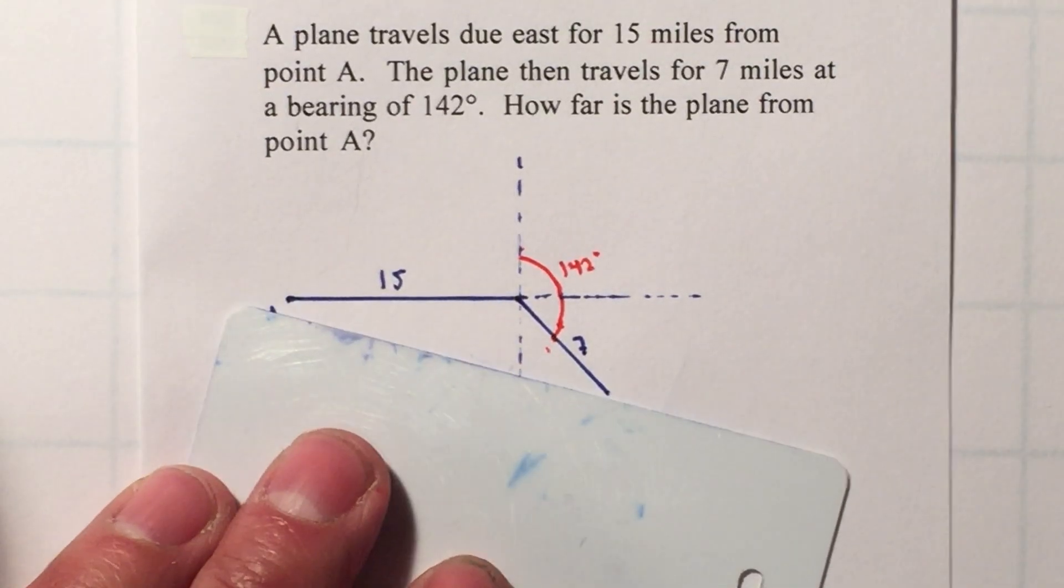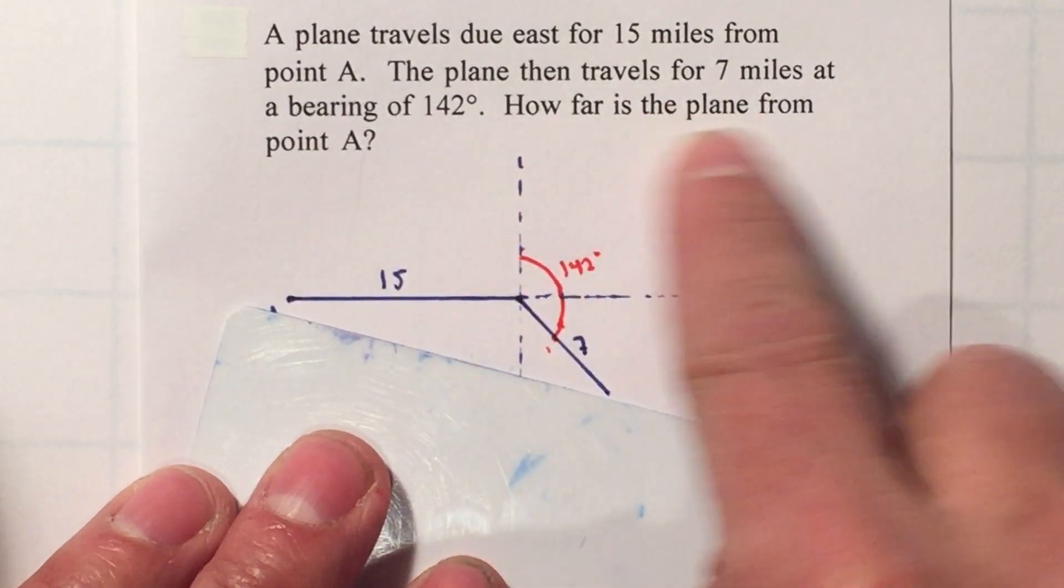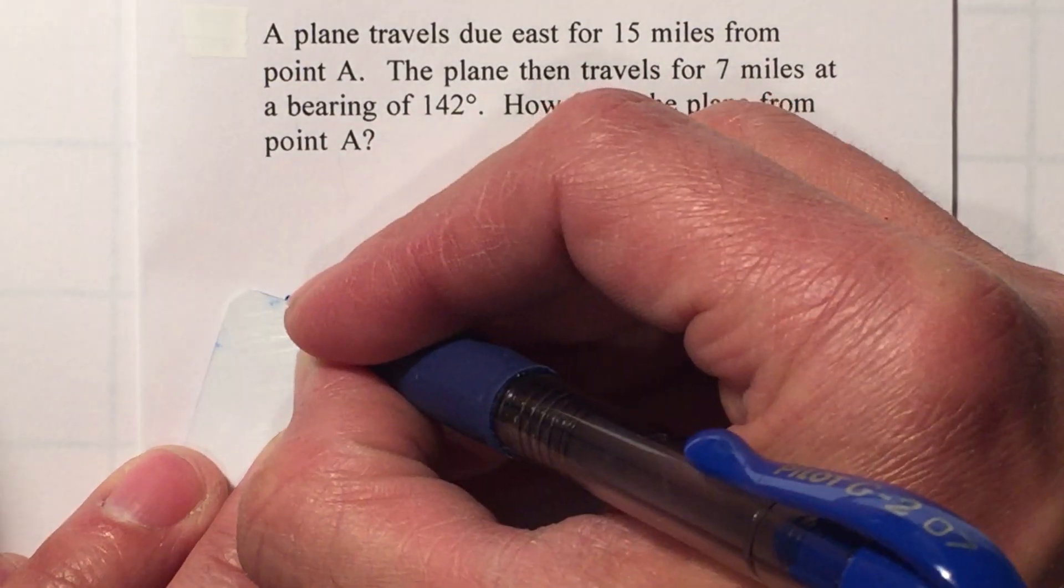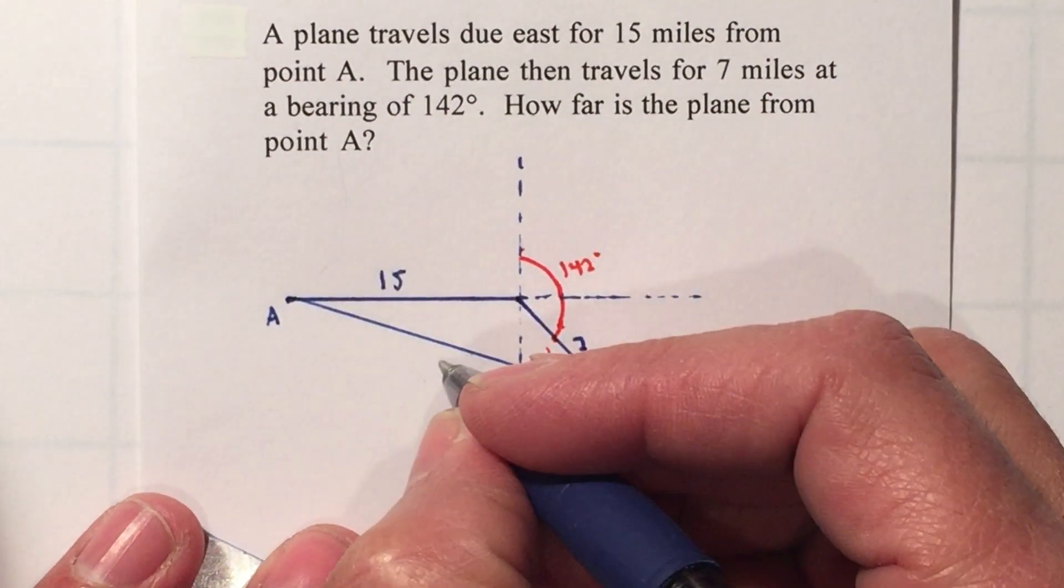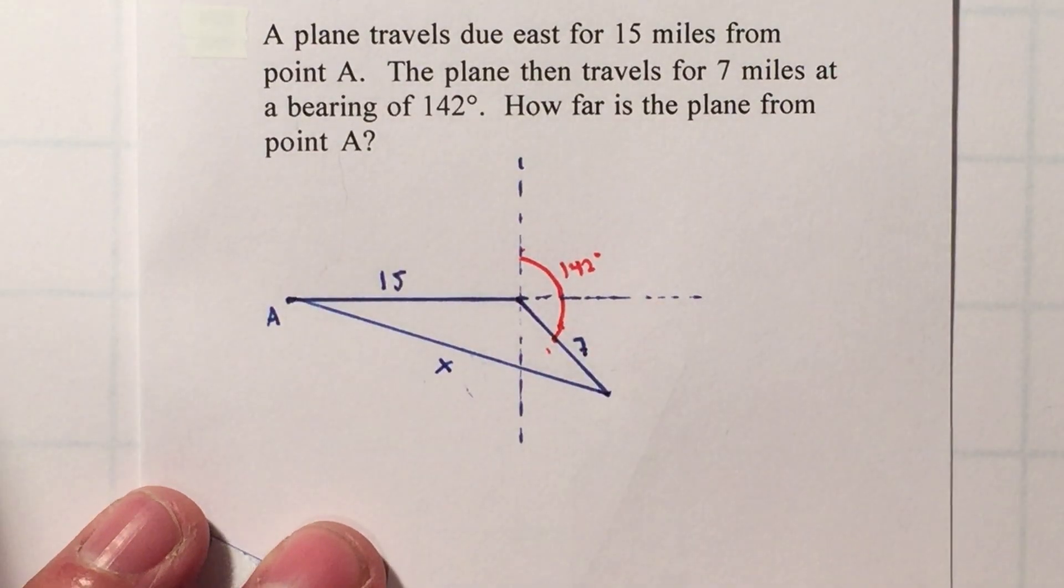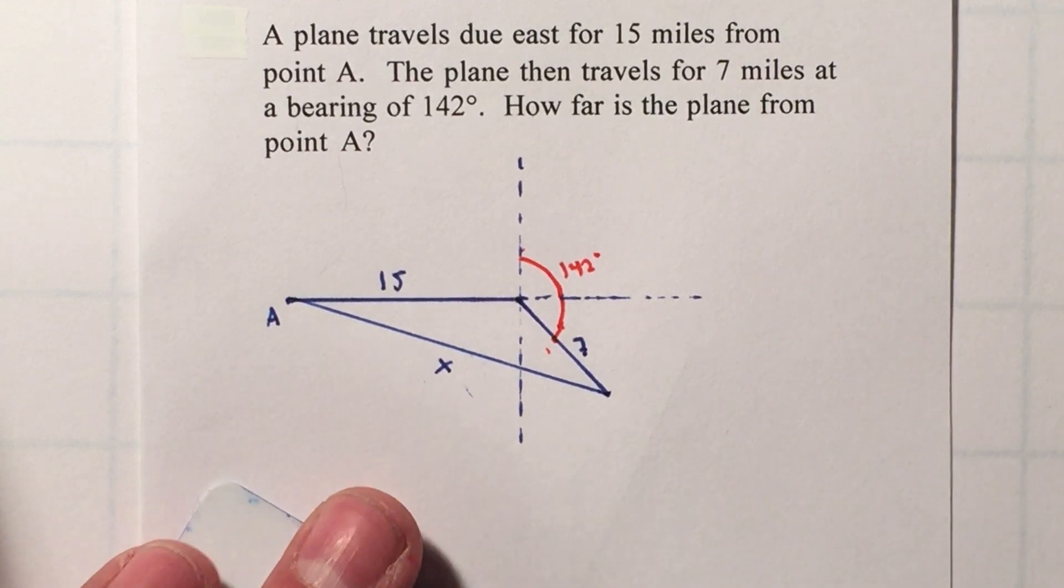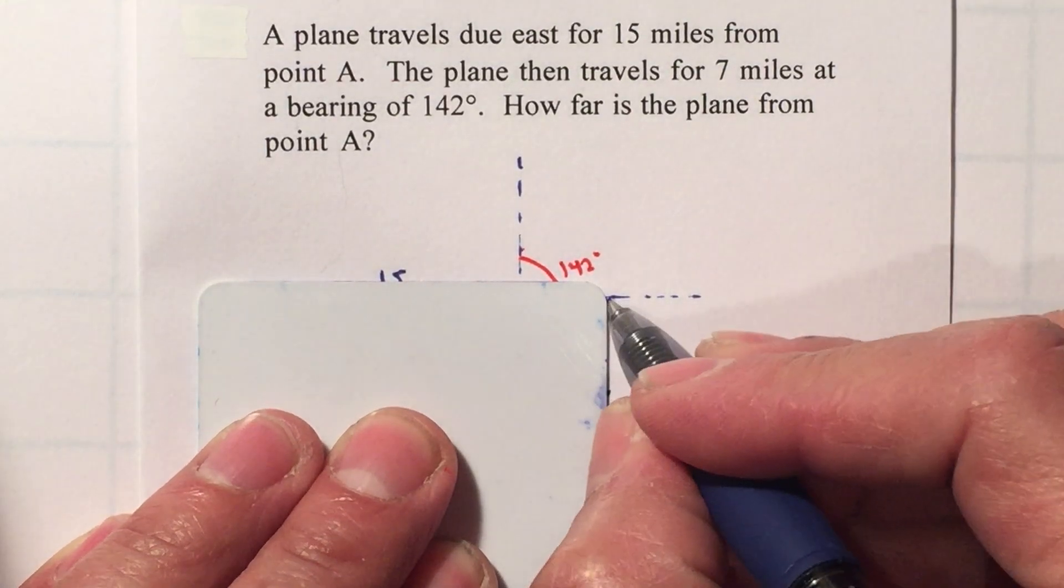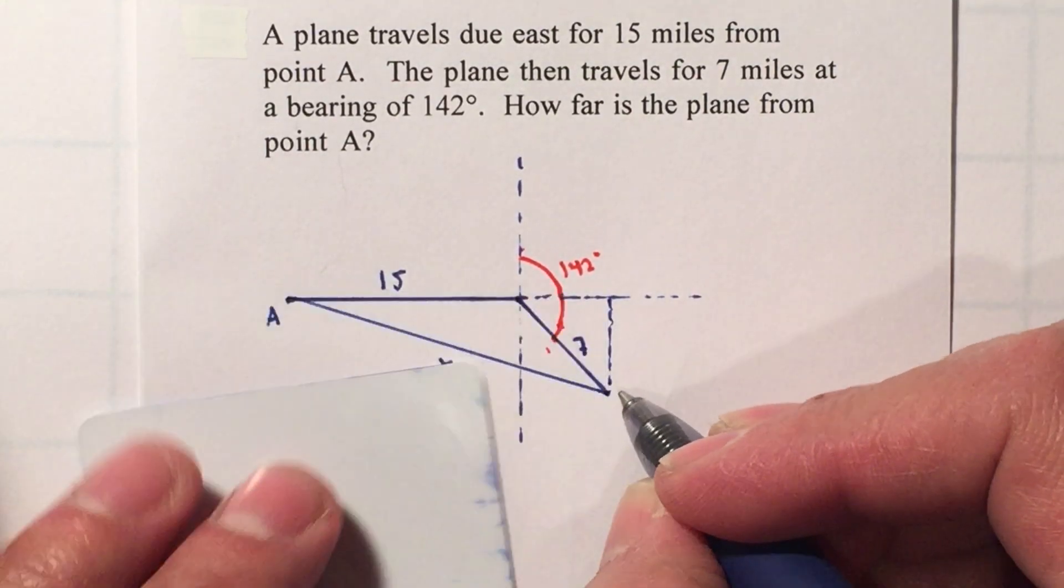And now it wants how far is the plane from point A. So you want to find this side here, and that'll be x. Now you want to be able to find an angle. Remember that there's going to be right triangles that are going to help you find the angle, so this will be a right triangle.